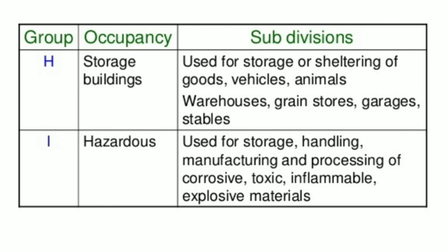Hazardous buildings are used for storage, handling, manufacturing, and processing of corrosive, toxic, inflammable, and explosive materials — such as petrochemical refineries.